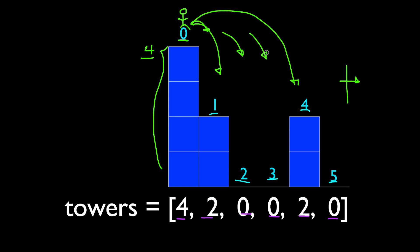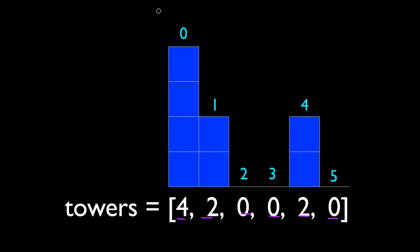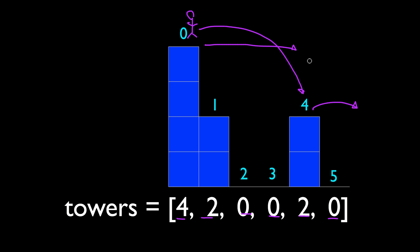Whatever next step you choose, you repeat the same process. For example, if you choose index 1 after index 0, you have a choice of jumping to index 2 or 3, because the height is 2. In this example, you can jump from index 0 to index 4 by jumping 4 steps, then jump from there to outside the array by jumping 2 steps. Note that if you jump one step to index 5, that wouldn't satisfy the requirement — our goal is to get outside of the array, not just to the end.